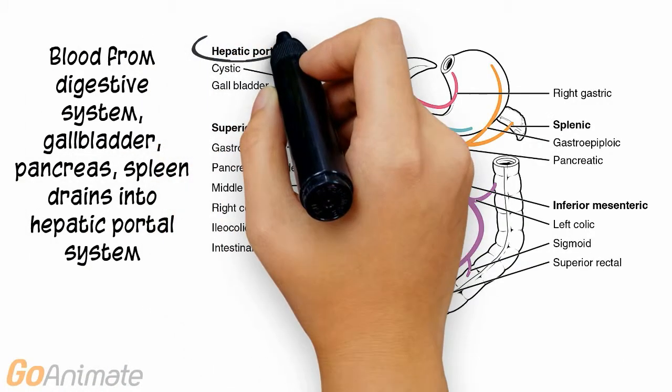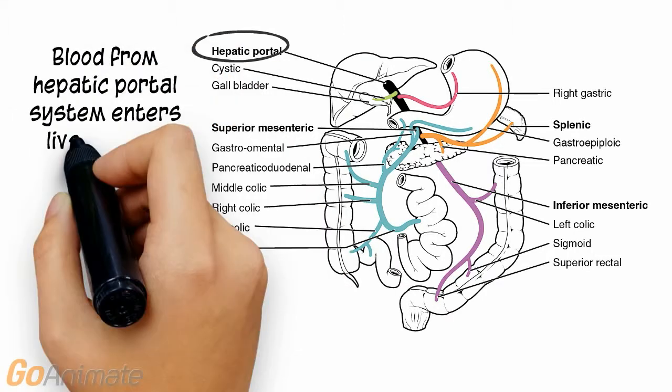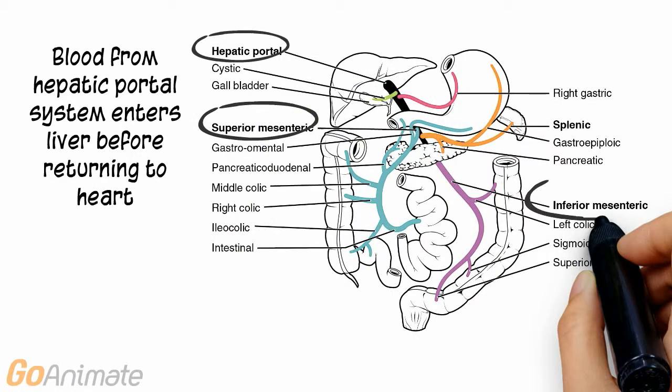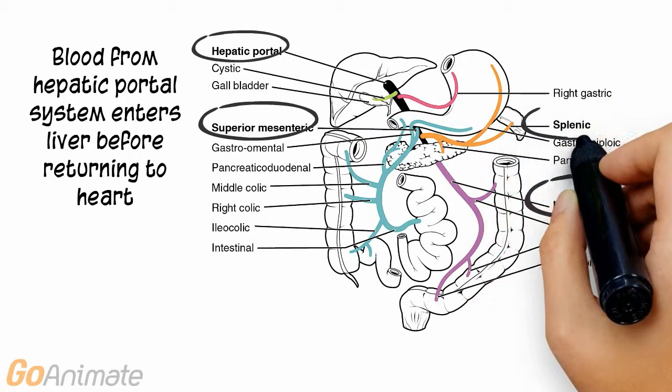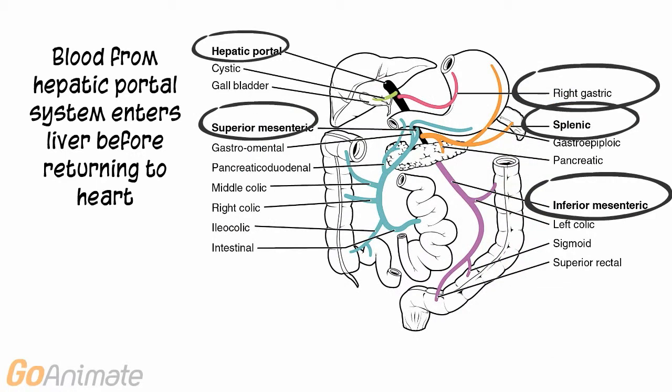The hepatic portal system receives blood from the digestive organs, gallbladder, pancreas, and spleen. It moves the blood into a capillary system in the liver before the blood can return to the heart. This allows for the liver to detoxify the blood as well as to package lipids.